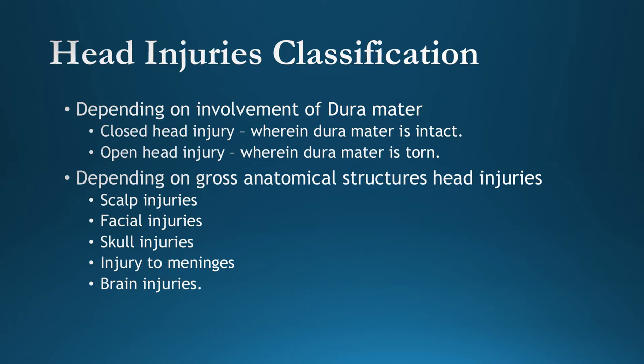Scalp injuries involve the hair-bearing part of the head. Facial injuries include eyes, nostrils, nose, lips, mouth, maxilla, mandible, and teeth. Skull injuries generally deal with fractures to the skull and cranial cavity. Injuries to meninges involve layers such as the dura mater, arachnoid mater, or other sub-skull layers. Brain injuries include cerebral and brain stem injuries.